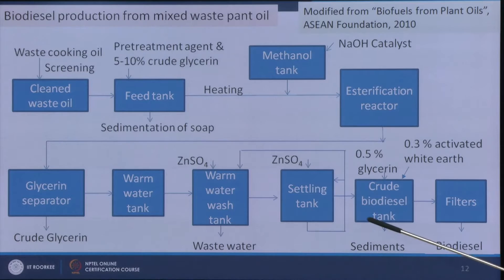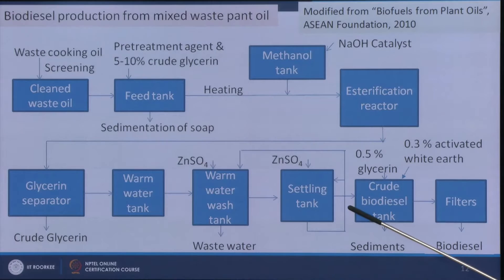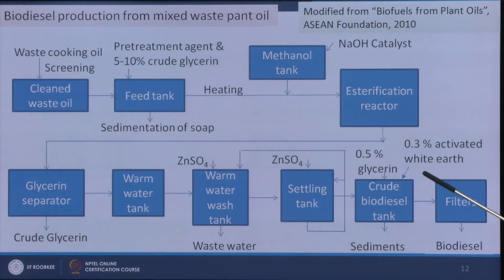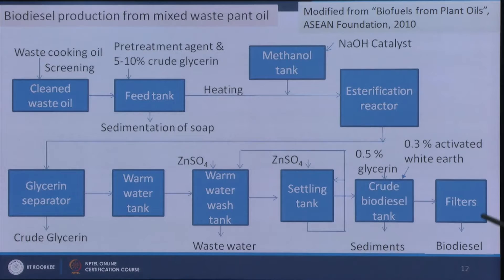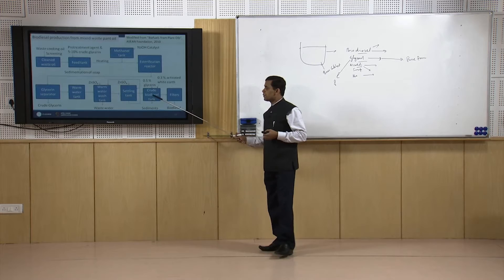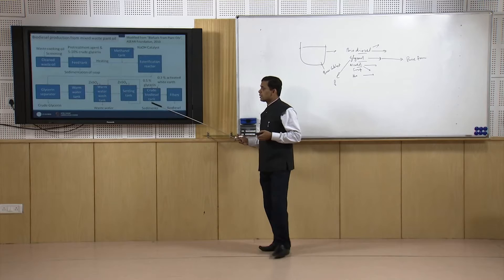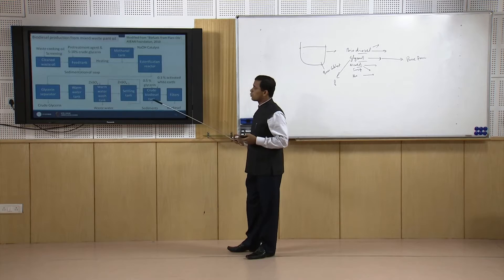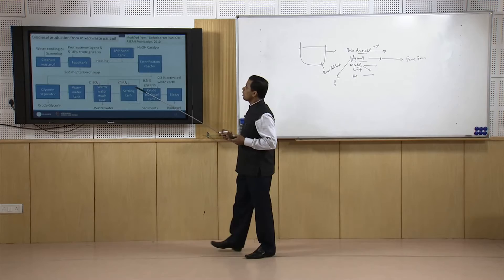From the settling tank we get apparently pure biodiesel, but further treatment is still required. It is sent to the crude biodiesel tank, where 0.5 percent glycerin and 0.3 percent activated white earth are added to help separate sediments. The mixture can then be sent through paper filters for final purification. About 15 minutes of stirring and overnight settling time is required in the crude biodiesel tank. This is the overall flow sheet for production of biodiesel from mixed waste plant oil.